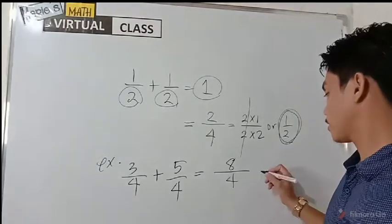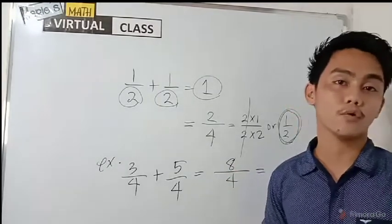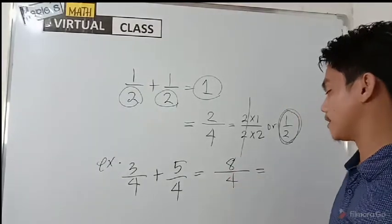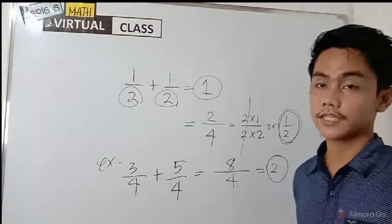Or you may also read this as eight-fourths or eight over four. So there are three ways to read this. But we know that eight-fourths is not yet in lowest term. Because we can divide eight by four and your answer is two. Therefore, the final answer is two.